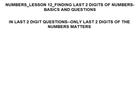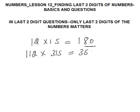The first concept is that while finding the last two digits, only the last two digits of the numbers matter. For example, 12 into 15 gives 180, so 80 are the last two digits. If I multiply 112 into 315, the product is 35280 — again, the last two digits are 80. The last two digits depend only on the last two digits of the numbers being multiplied.